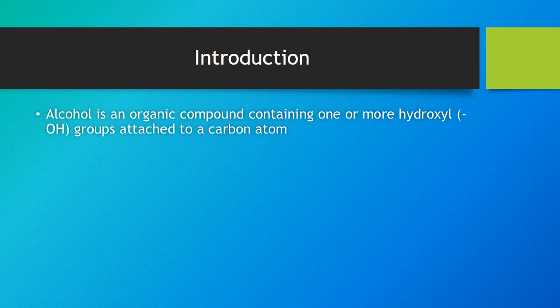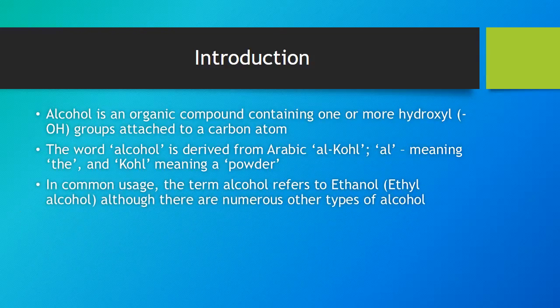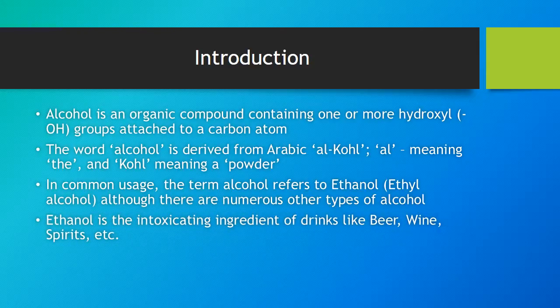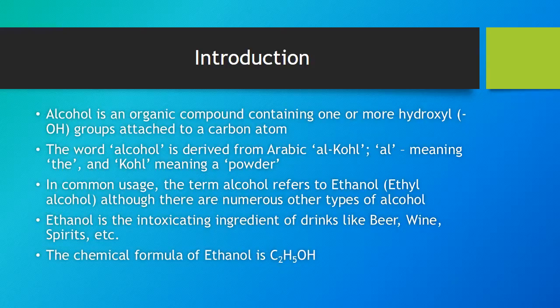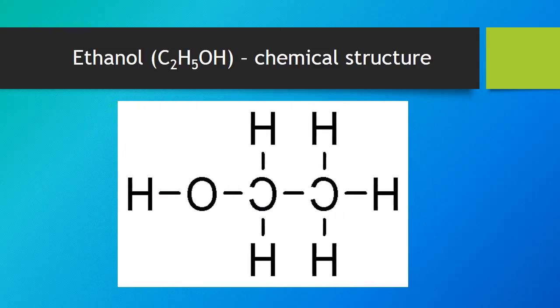Alcohol is an organic compound containing one or more hydroxyl groups attached to a carbon atom. The word alcohol is derived from Arabic al-khol. In common usage, the term alcohol refers to ethanol or ethyl alcohol, although there are numerous other types of alcohol. Ethanol is the intoxicating ingredient of drinks such as beer, wine, spirits, etc. The chemical formula of ethanol is C2H5OH, and this is the chemical structure of ethanol.